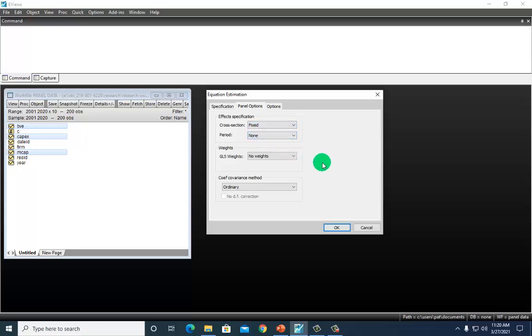Now I'm going to have to run the fixed effects model first and then afterward I run random effects. You've got to do that in those two stages to be able to perform the Hausman test. So click OK.